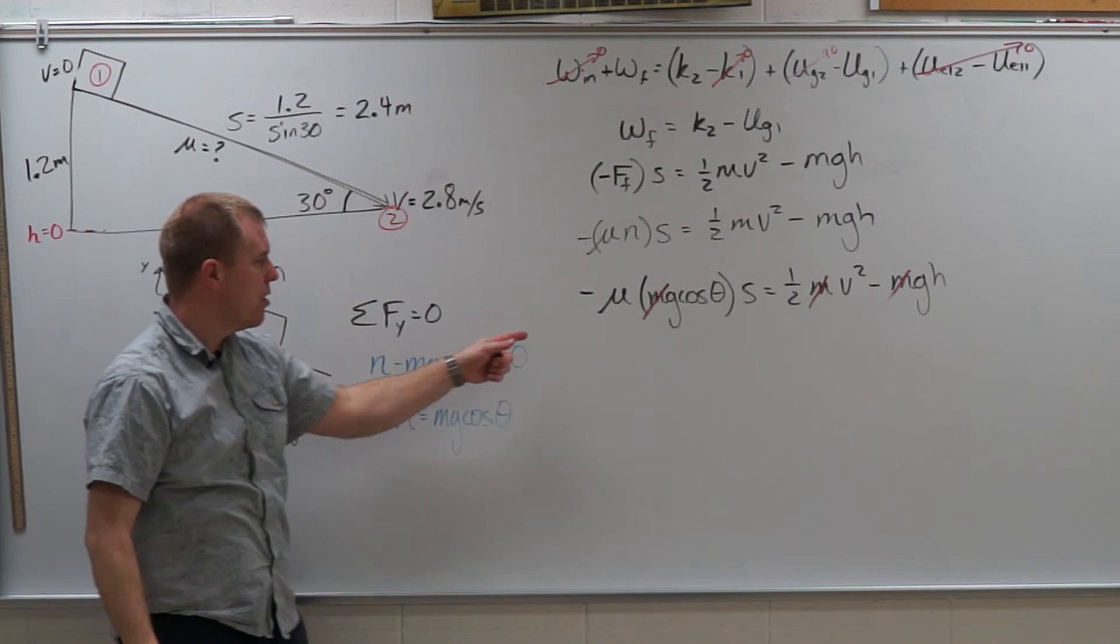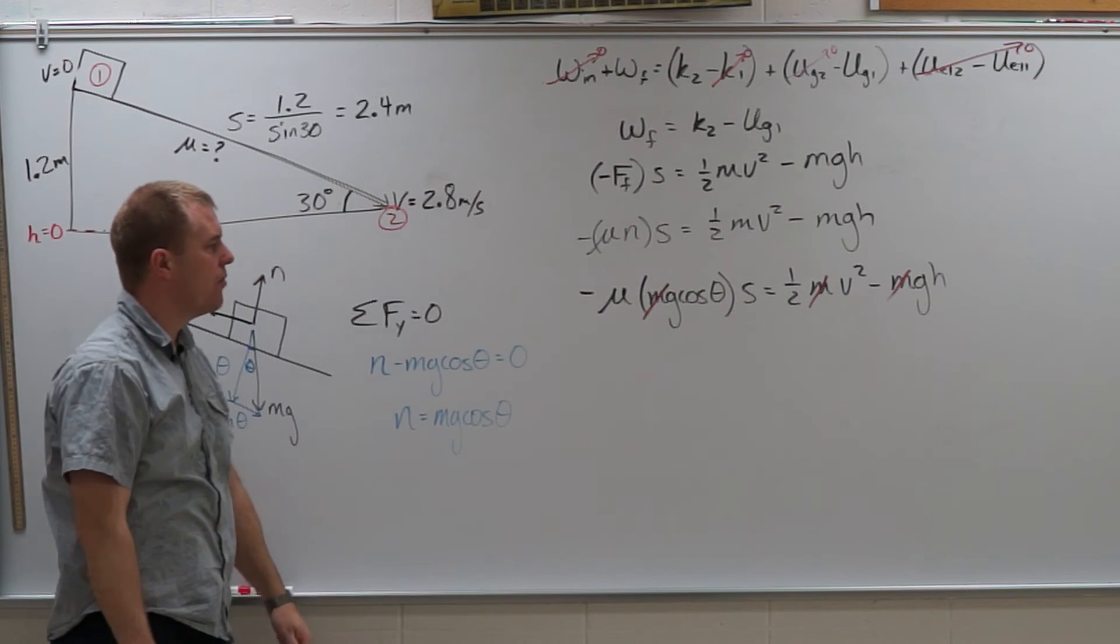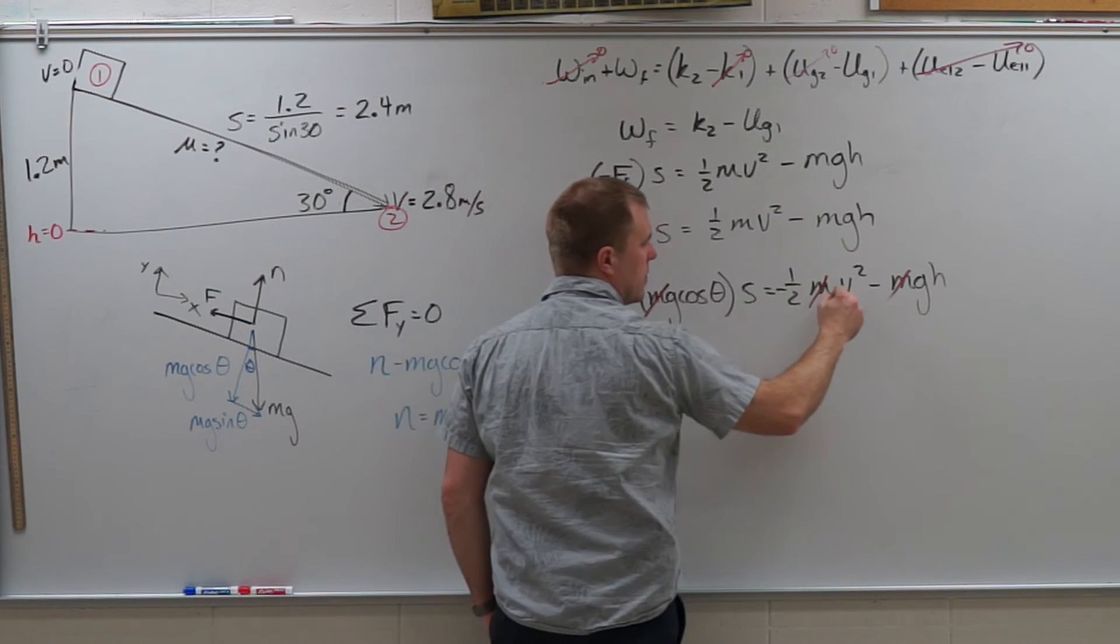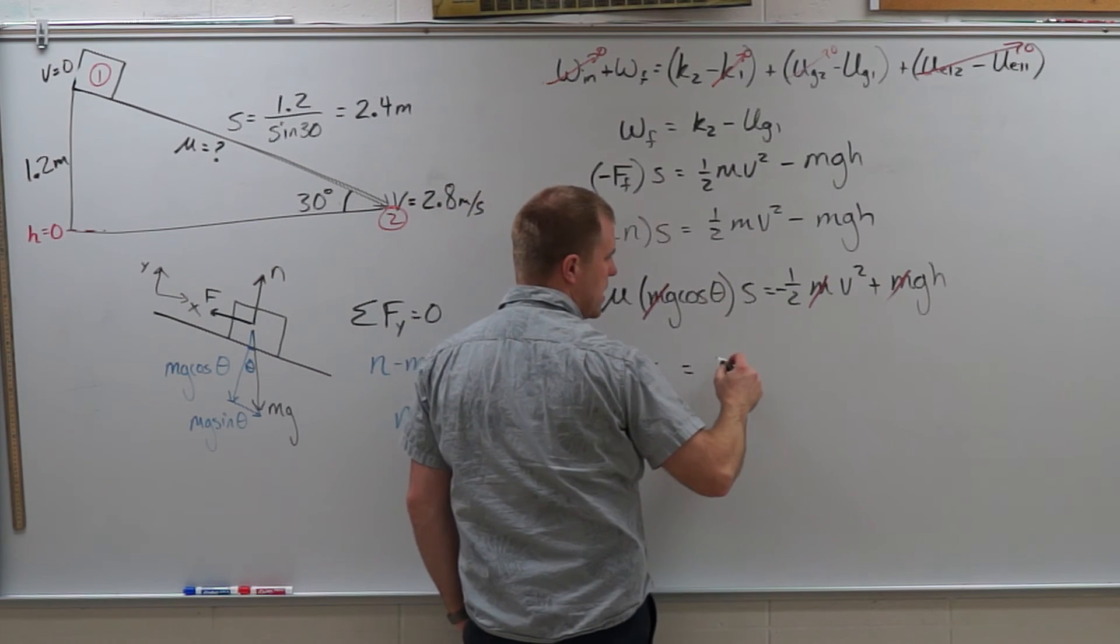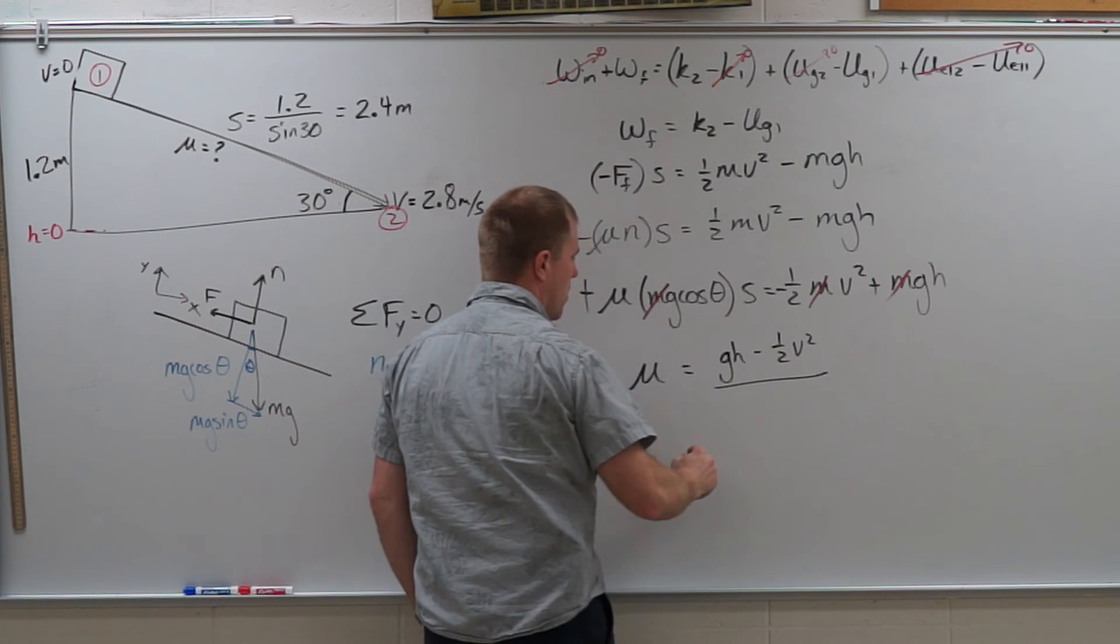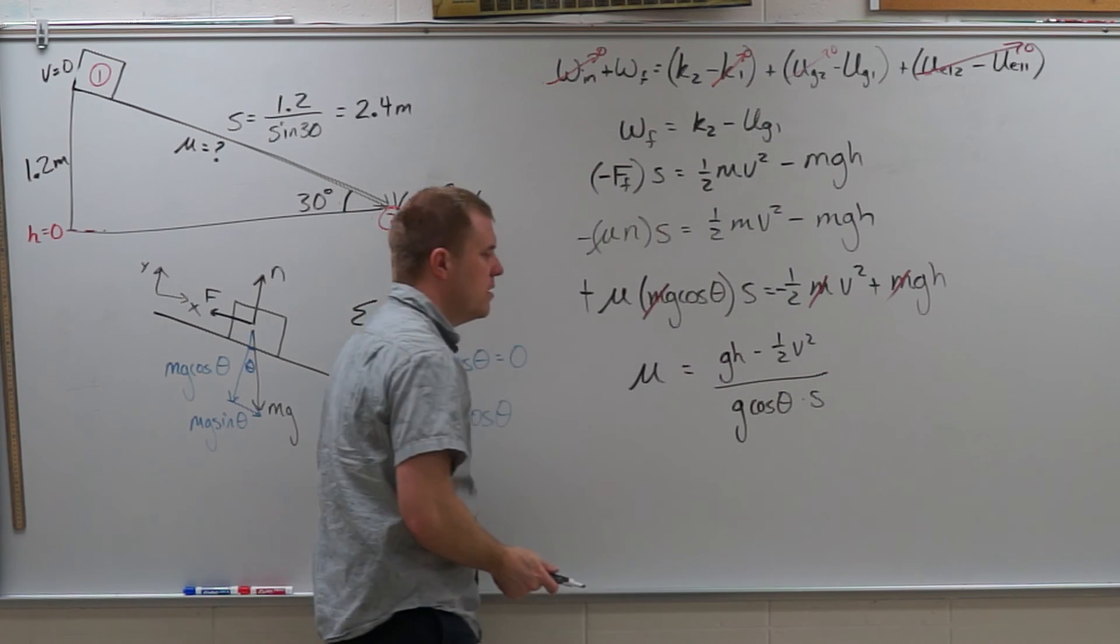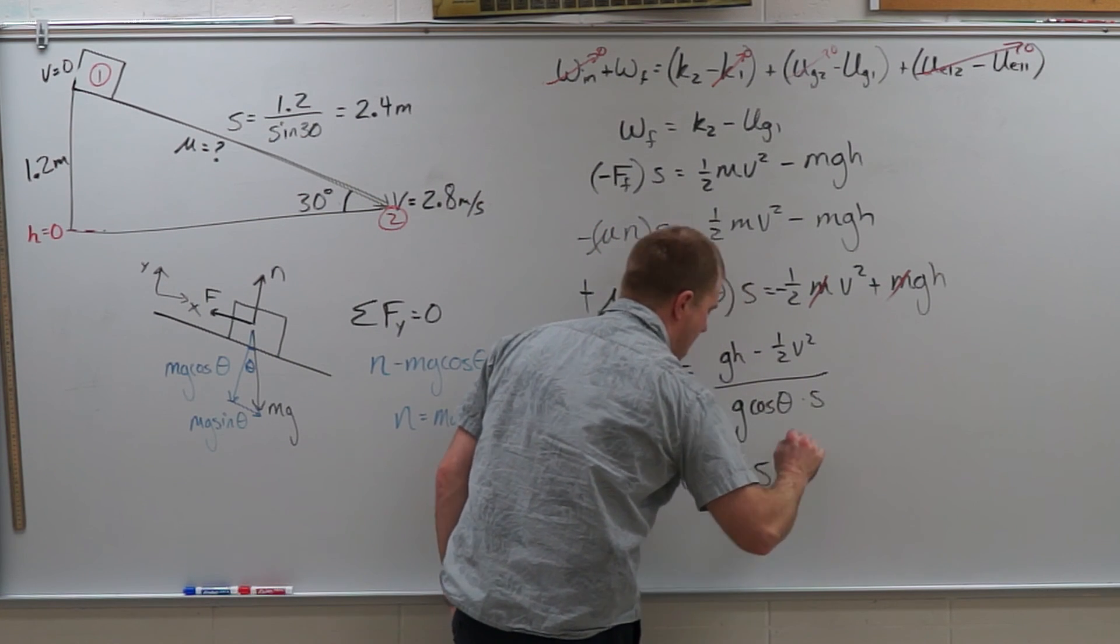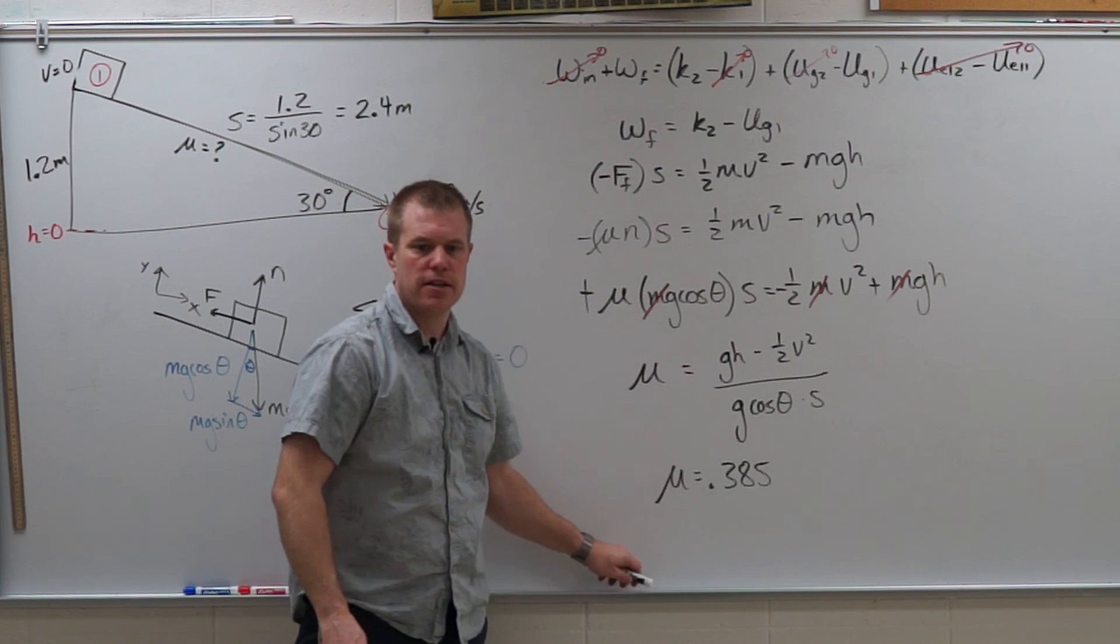So now I do know g, theta, s, v, g, and h. I know all my variables so I just need to solve for mu. So I'm going to get rid of the negative sign over to the other side. I'm going to divide the g and cosine theta and s over to the other side as well. So mu is going to equal gh minus one half v squared all divided by g cosine of theta times s. Plug in my numbers and I end up with a mu of 0.385 which is a reasonable coefficient of friction. And again there are no units on the coefficient of friction.